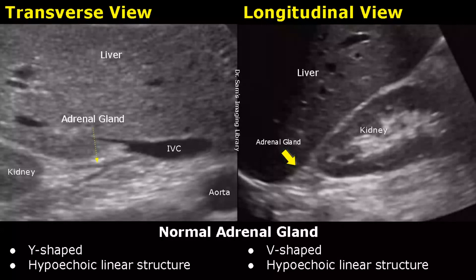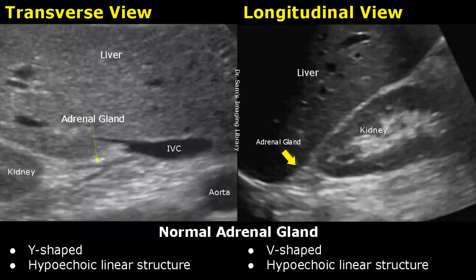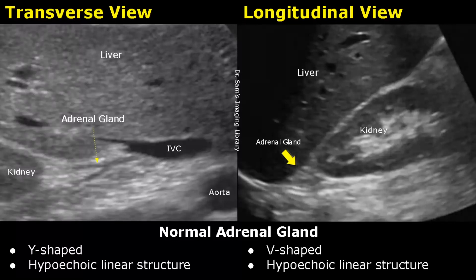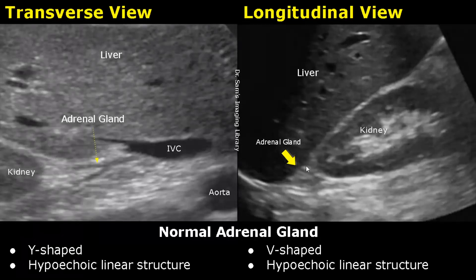In adults, adrenal glands are difficult to see on ultrasound, especially the left adrenal gland, which is very hard to find. Usually the right adrenal gland is more visible. In newborns, adrenal glands are much easier to locate. In the transverse view, it is seen as a Y-shaped linear hypoechoic structure, and in the longitudinal view it is seen above the upper pole of the kidney as a V-shaped hypoechoic linear structure.